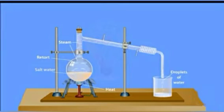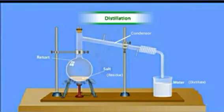We will see the steam getting collected inside the beaker in the form of droplets of water. The steam condenses in the condenser and reaches the beaker and the salt is left behind in the retort.